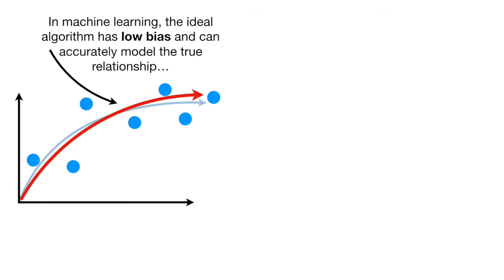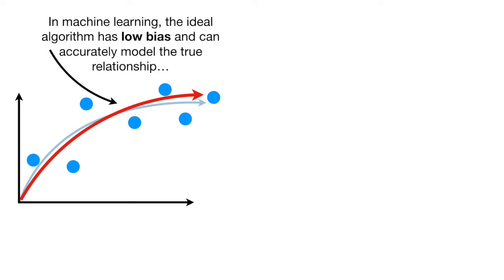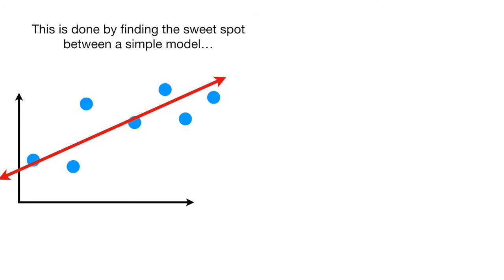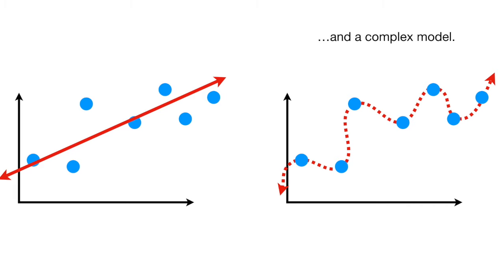In machine learning, the ideal algorithm has low bias and can accurately model the true relationship. And it has low variability by producing consistent predictions across different data sets. This is done by finding the sweet spot between a simple model and a complex model.